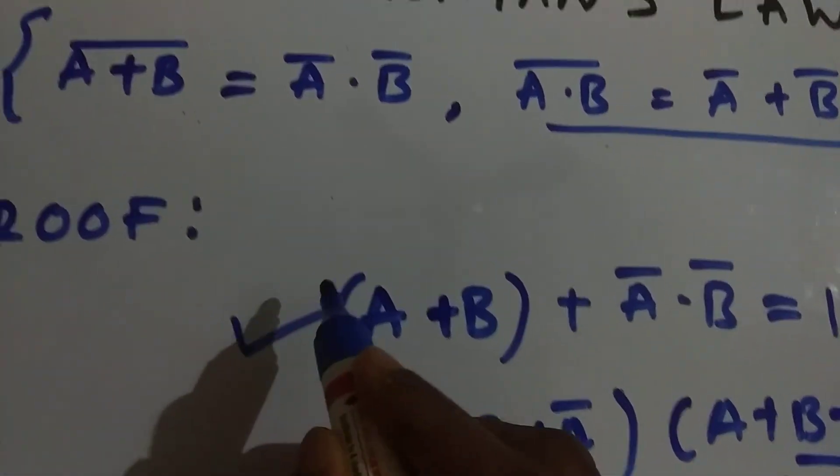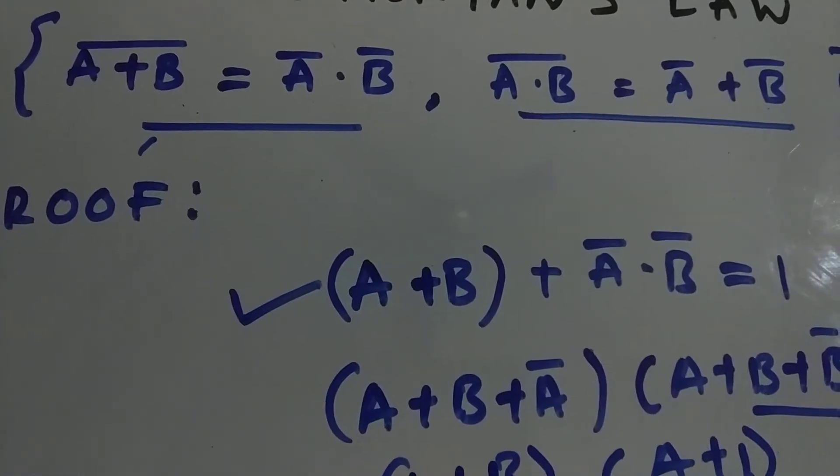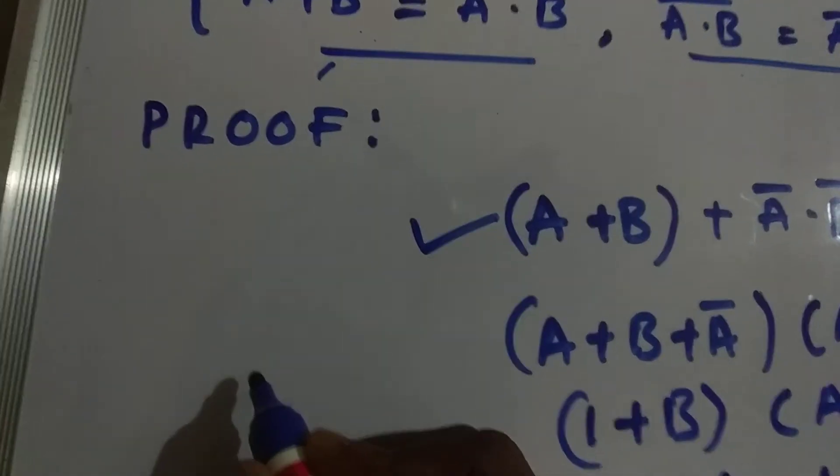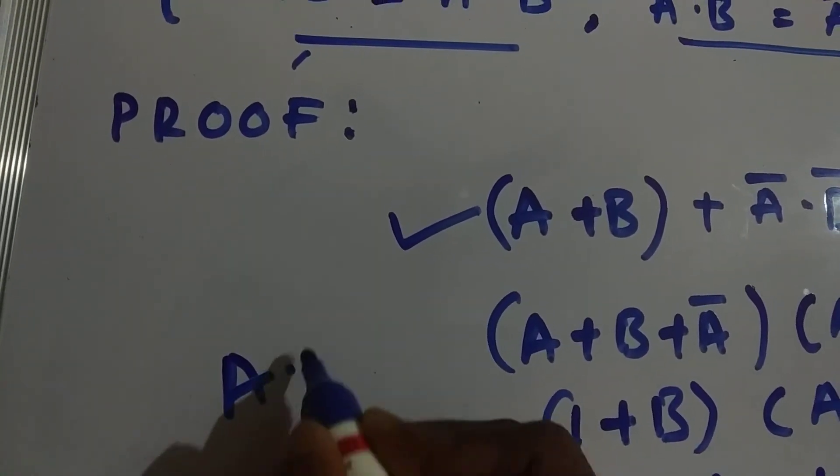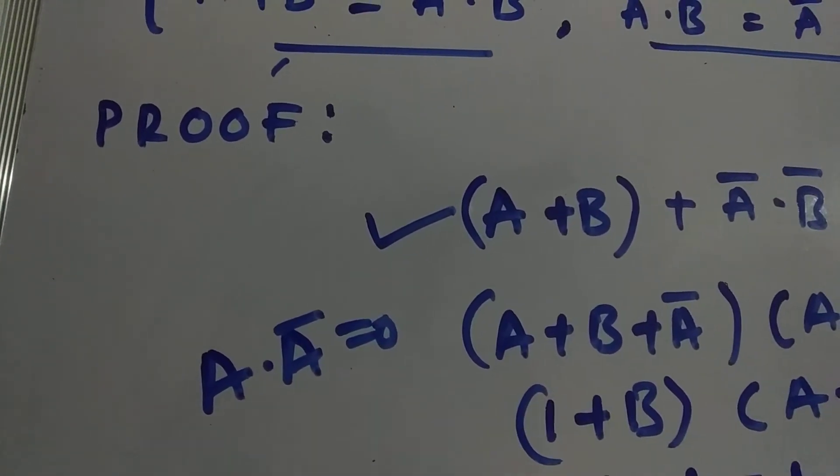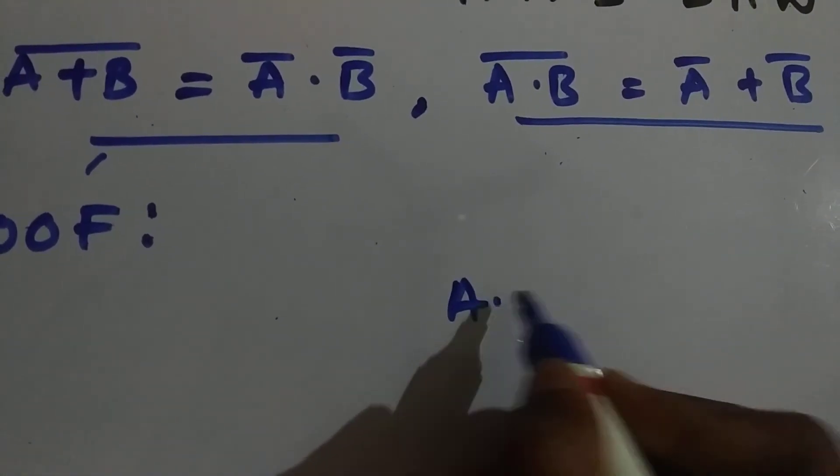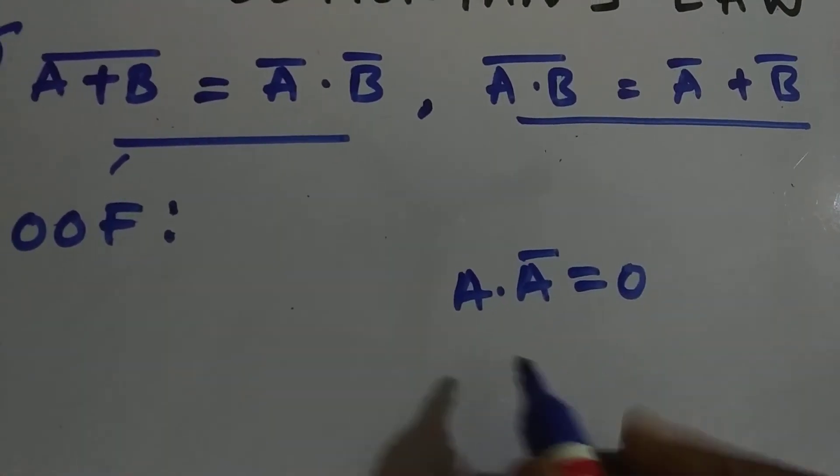This proves that this is correct. This is proved. Now we can prove it another way also. You can prove it in a simple way: A into A bar equals 0. Let's see how we can prove this one. Using A into A bar equals 0, we can prove De Morgan's law.